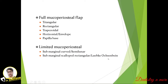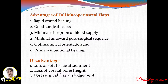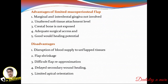Advantages of full mucoperiosteal flaps are: rapid wound healing, good surgical access, minimal disruption of blood supply, minimal post-surgical sequelae, optimal apical orientation, and primary healing. However, disadvantages include loss of soft tissue attachment, loss of crestal bone height, and post-surgical flap dislodgement. Advantages of limited mucoperiosteal flaps are: marginal and interdental gingiva are not involved, unaltered soft tissue attachment level, crestal bone is not exposed, adequate surgical access, and good bone healing potential.